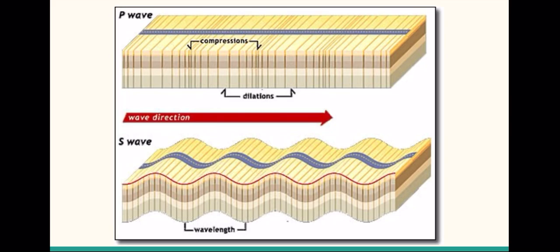The surface waves are generally the largest recorded from an earthquake. Body waves in the Earth's interior lose their amplitude rapidly as they get farther from the earthquake because they spread out inside the volume of Earth. Surface waves, however, spread out more slowly and only on the Earth's surface. The energy from surface waves is confined to a smaller volume at the surface, and the wave amplitude is therefore larger than that of body waves.